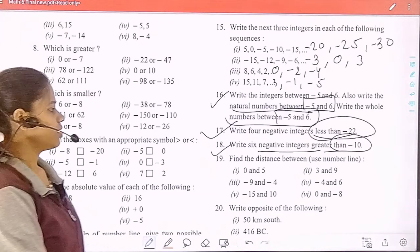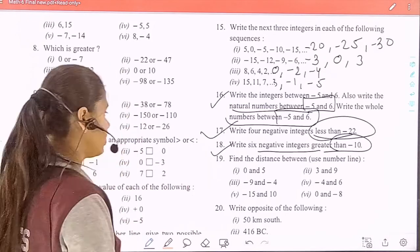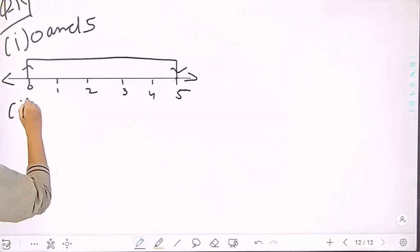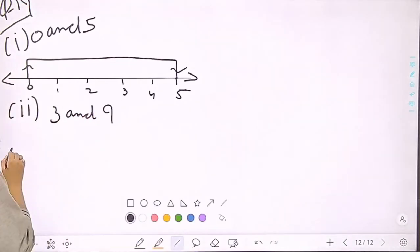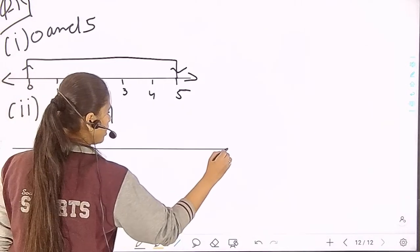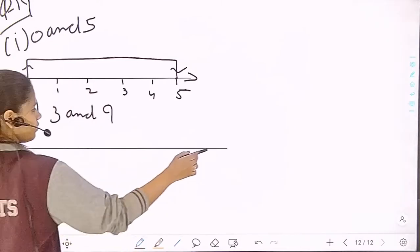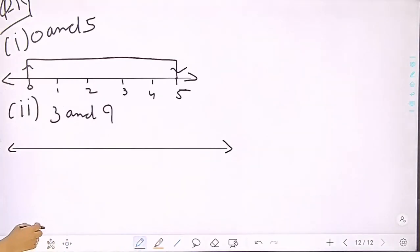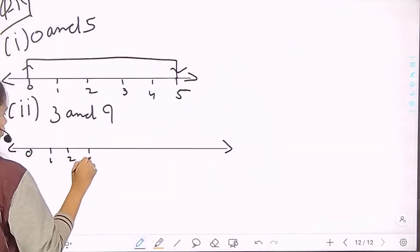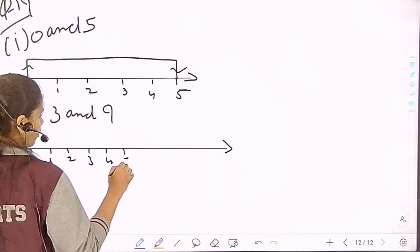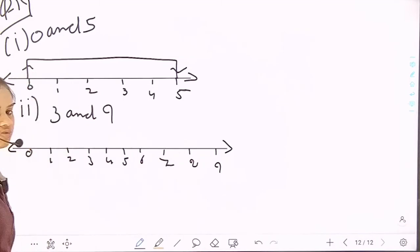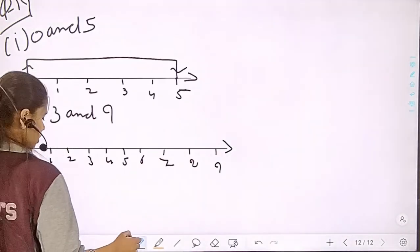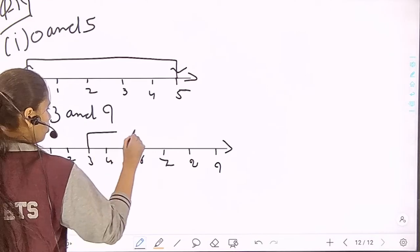Second pair: 3 and 9. We draw a number line and mark points 0, 1, 2, 3, 4, 5, 6, 7, 8, 9. You have to mark these points with the help of a ruler. The distance between 3 and 9 is 6.